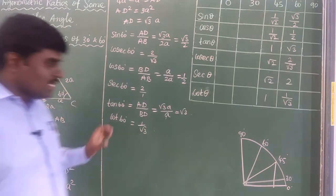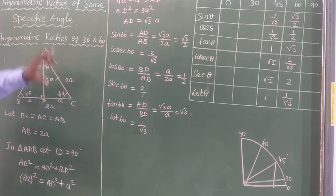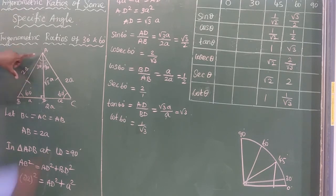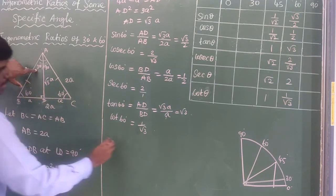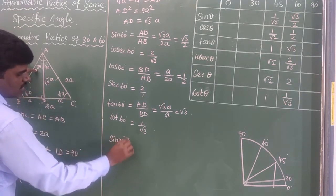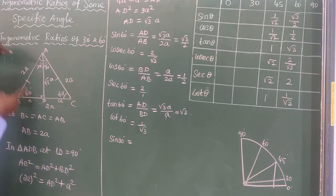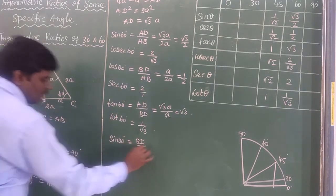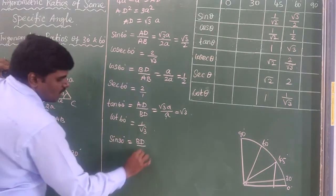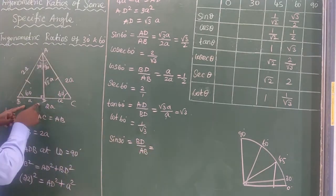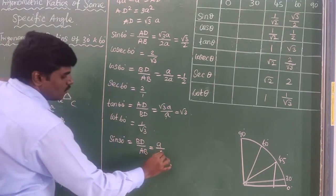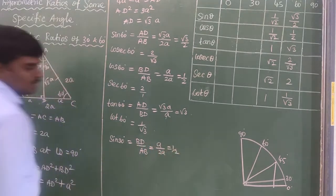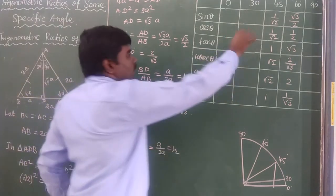Now from the same triangle I find the 30 degree values. The angle at A is 30 degrees. Sin 30° equals opposite side over hypotenuse. The opposite side is BD and the hypotenuse is AB. So sin 30° = BD / AB = A / 2A = 1/2.